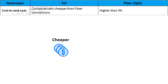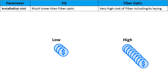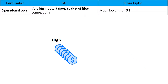Next, let's discuss the commercial aspects of fiber optic and 5G. The essential cost consideration is cost to the end user — in this case, 5G is far cheaper than fiber. The installation cost is also significantly lower in the case of 5G technology. Interestingly, the operational cost turns the table in fiber optics' favor: the upkeep cost of 5G is way higher, while fiber optics is significantly lower.